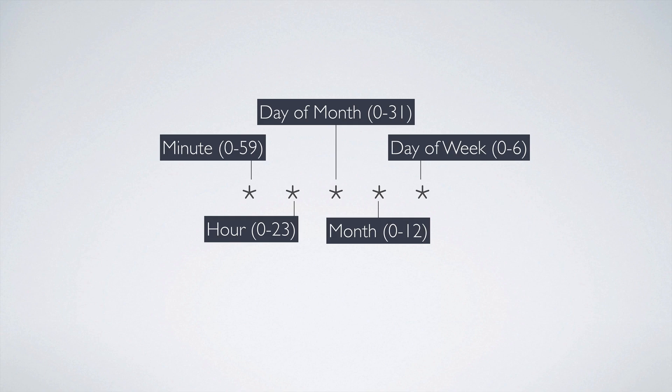The second asterisk denotes the hour. If we were to set this to one, then it would run every minute during the 1am hour. The day of month is the day on which within the month the job occurs. The fourth asterisk, month, denotes which month the command will run in. And day of the week denotes 0 through 6 — that's Sunday for 0, then Monday, Tuesday, Wednesday, Thursday, Friday, and Saturday for 1 through 6.